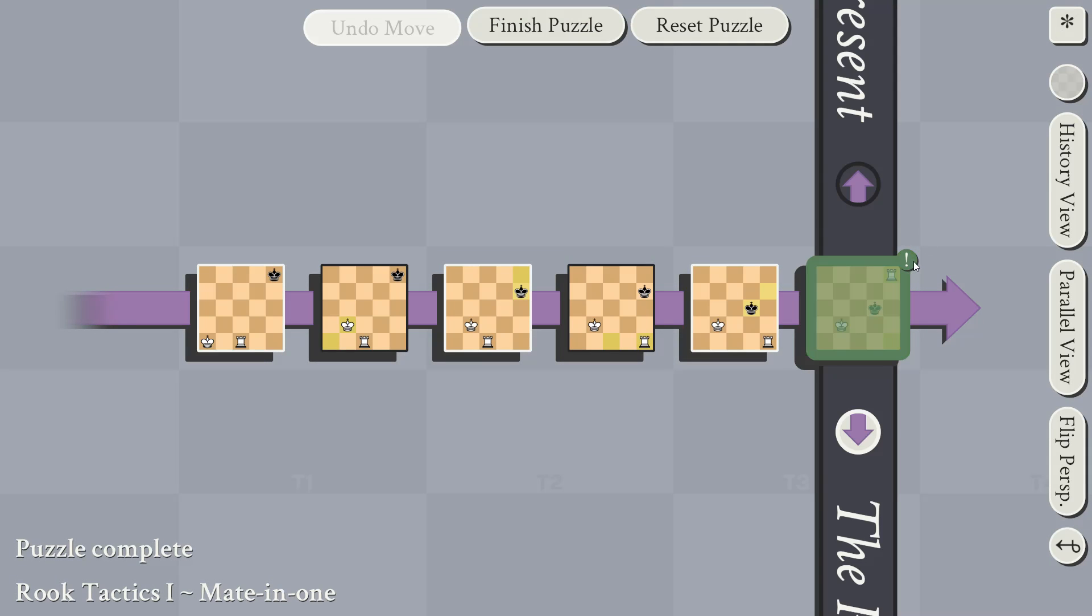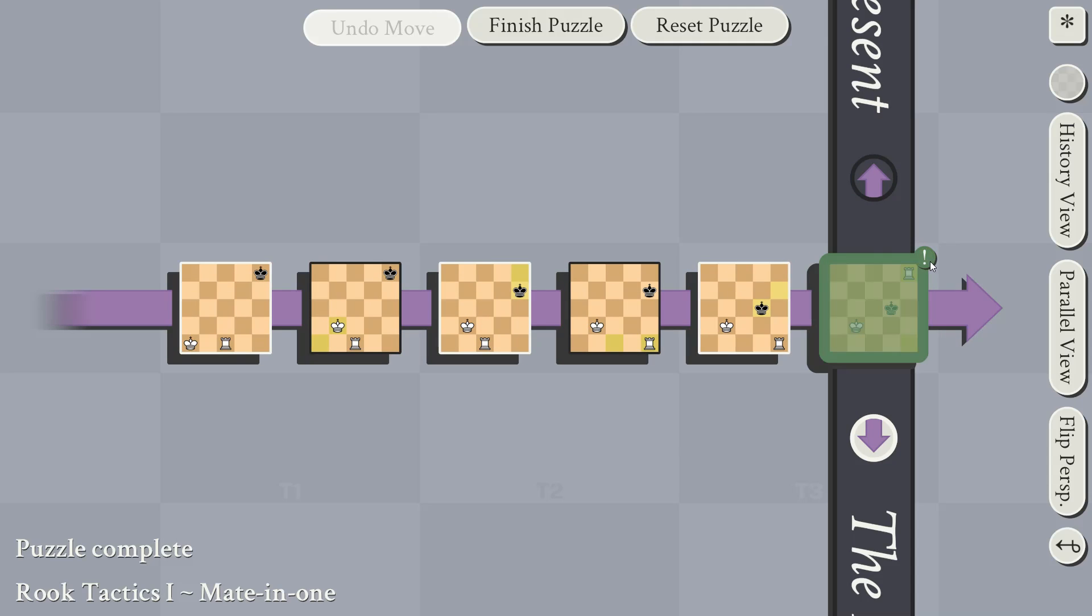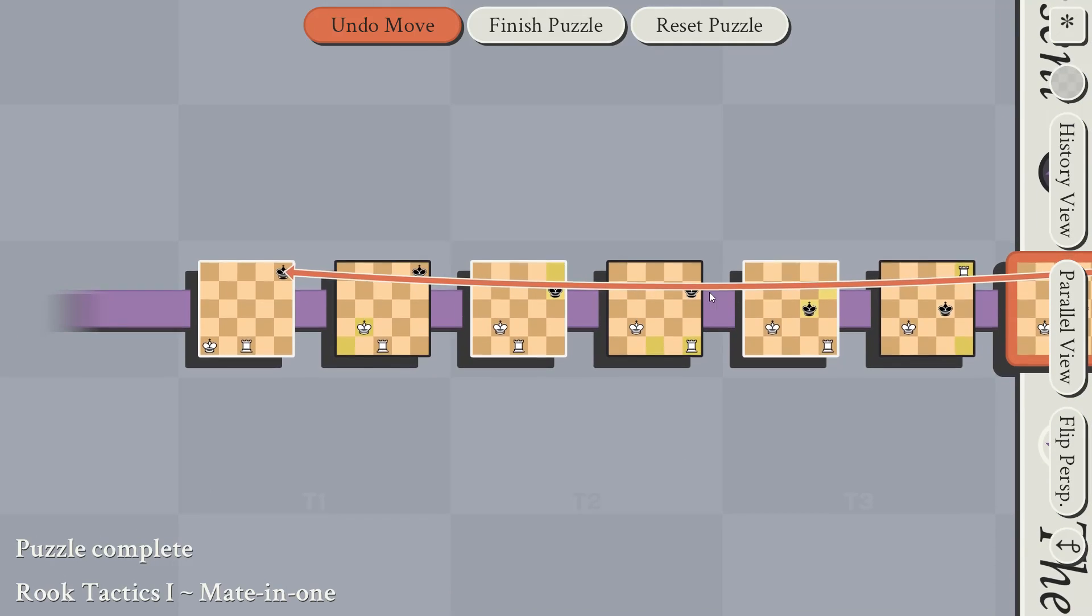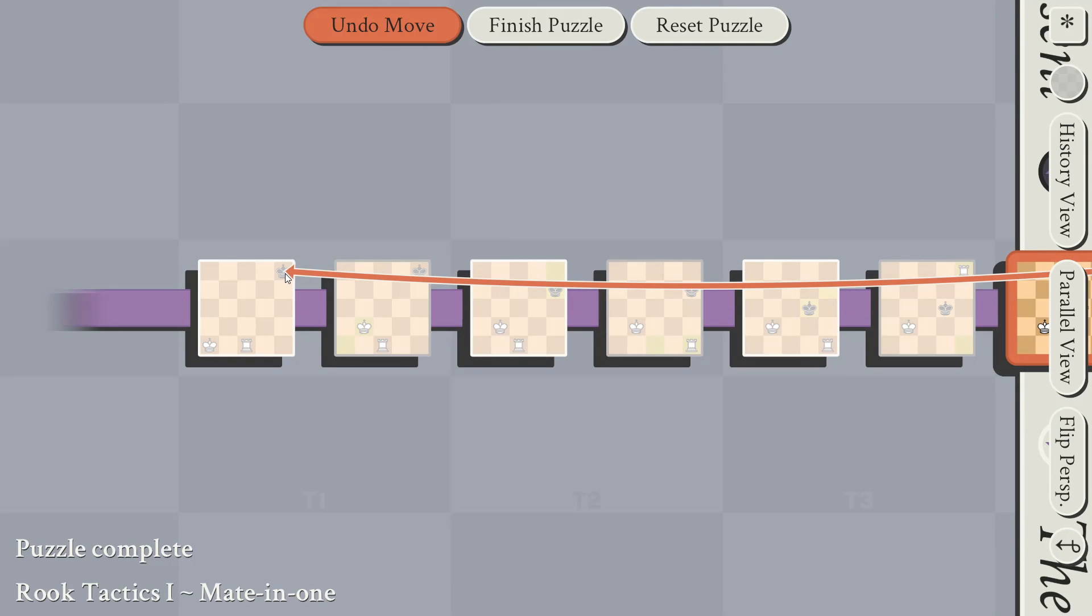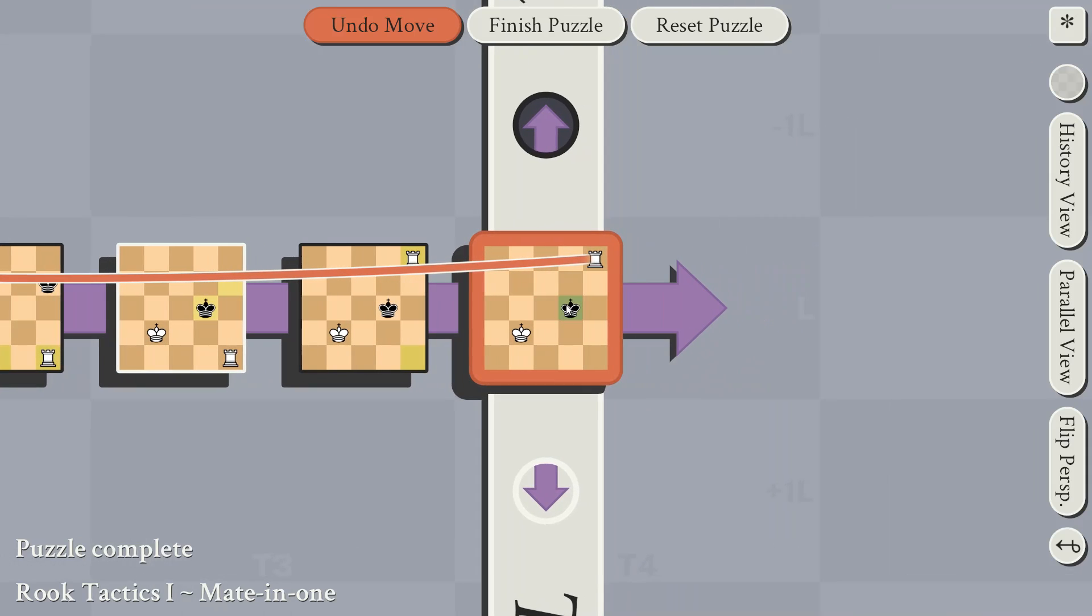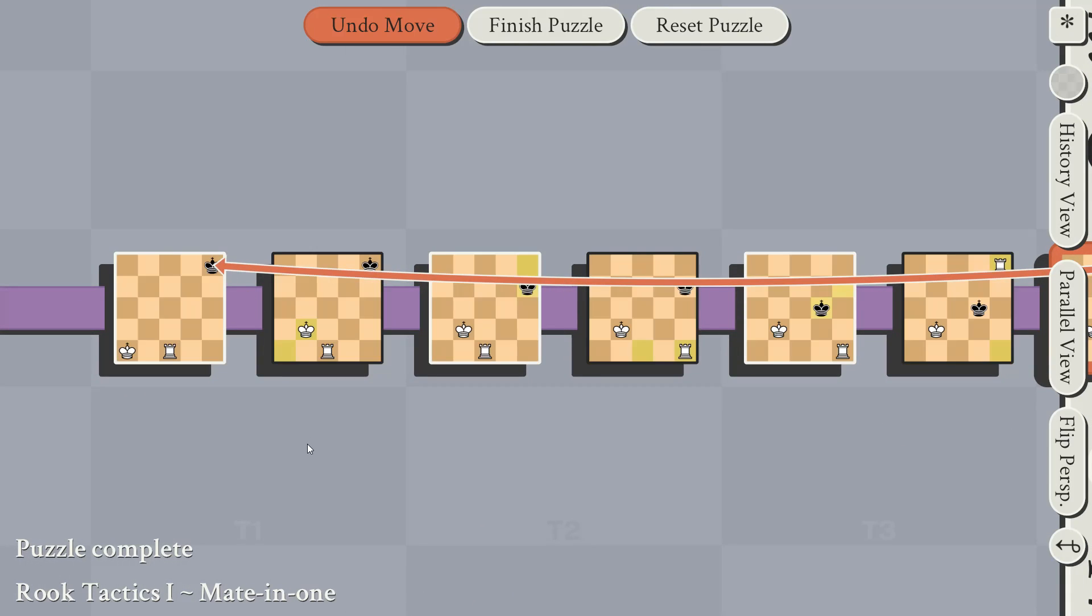This exclamation point means that it's a check, and when I click on it, you can see that all I would have to do on my next turn is to move over and capture this king. Black can't do anything about it because this king cannot capture my rook, and he cannot change what has already happened in the past.